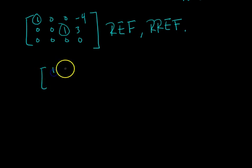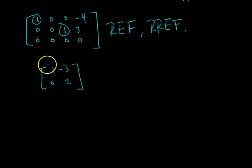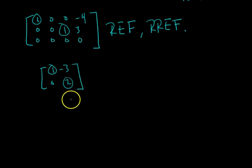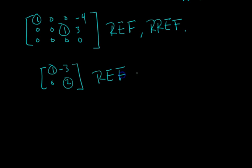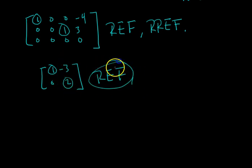Here's another example: 1, negative 3, 0, 2. Identify your pivots. Are there zeros below each pivot? Yes. Do they go top-left to bottom-right? Yes. There are no rows of all zeros. So this satisfies all three conditions for row echelon form. For reduced row echelon form, it's pretty quick to see the pivots aren't equal to one, so it's not in reduced row echelon form. Also, there aren't zeros above each pivot — this two has a negative three above it. So this is only in row echelon form.